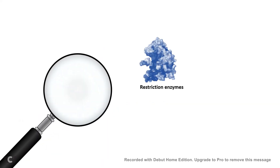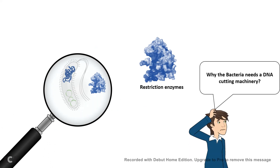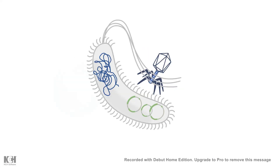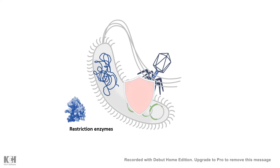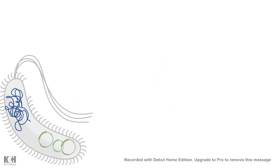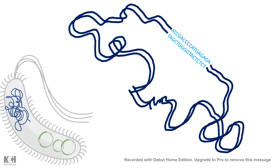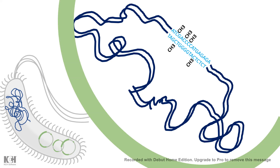Why were restriction enzymes isolated from bacteria? Why do bacteria even need the restriction endonuclease machinery? Scientists figured out that restriction enzymes give bacteria like E. coli protection against phage infections. Restriction endonuclease can recognize phage DNA and selectively cut and destroy it, but does not cut its own DNA because E. coli's own DNA is methylated at specific residues, which prevents the restriction endonuclease from engaging and cleaving it.